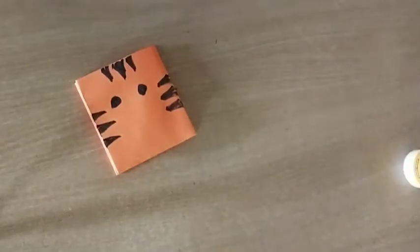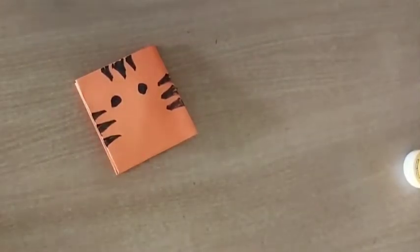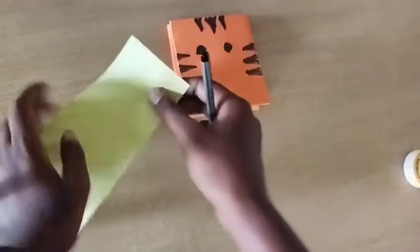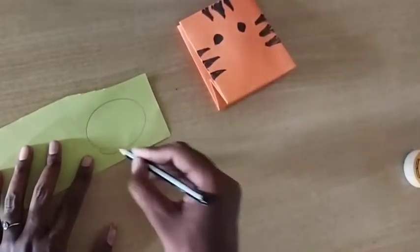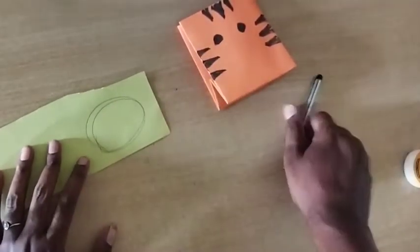Now we will add yellow color paper for details. We'll cut a small piece of yellow paper in an oval shape.